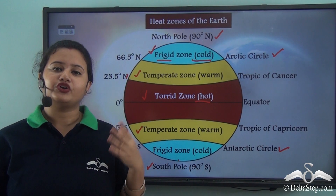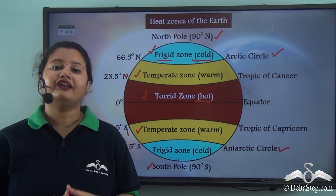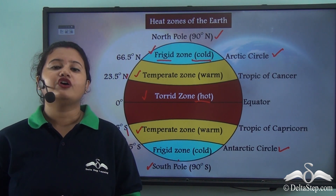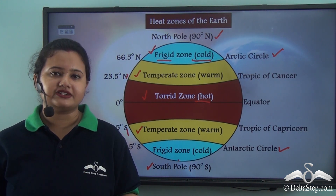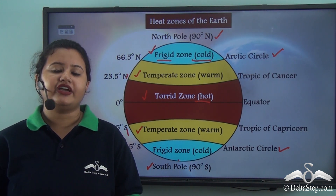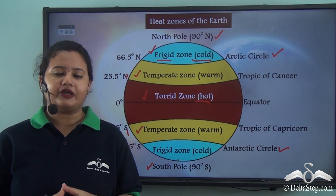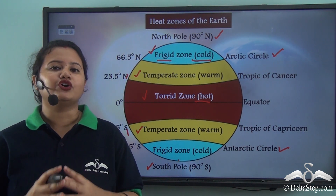They are the Torrid zone, Temperate zone, and Frigid zone. In our next video we will discuss about the factors that affect the distribution of temperature across the globe.